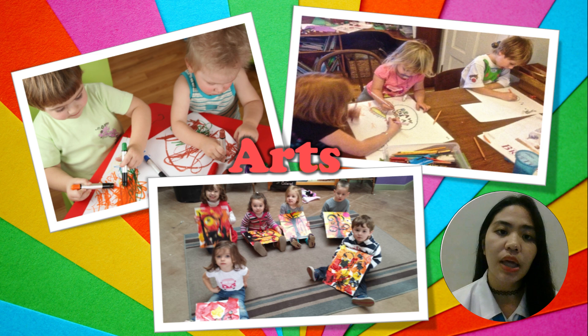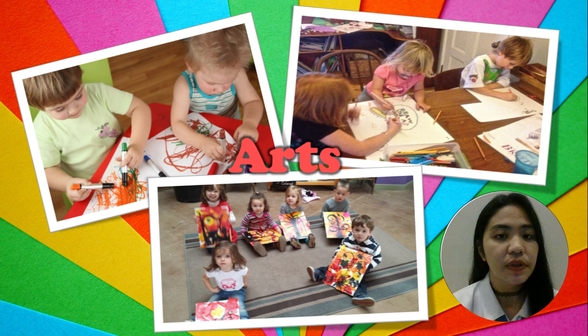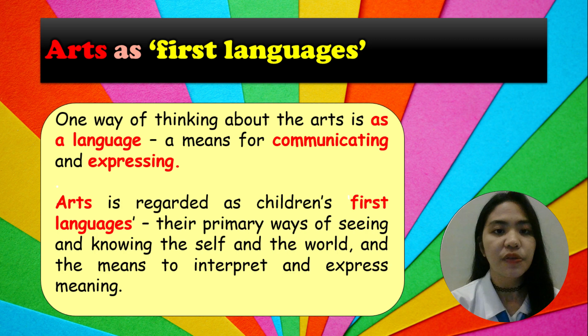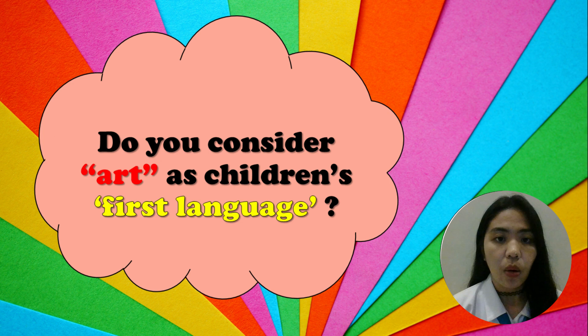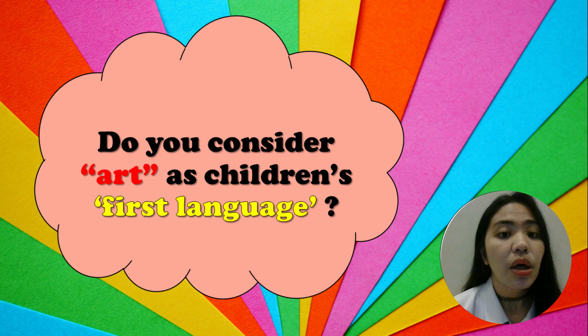The aim of this chapter is to focus on very young children's existing sophisticated capacities or literacies, and to feature how the arts are central to the curriculum for young children. Art as first languages — one way of thinking about the arts is as a language, a means for communicating and expressing. The arts might more appropriately be regarded as children's first languages: their primary ways of seeing and knowing the self and the world, and the means to interpret and express meaning. What are your opinions on the arts being regarded as children's first languages?